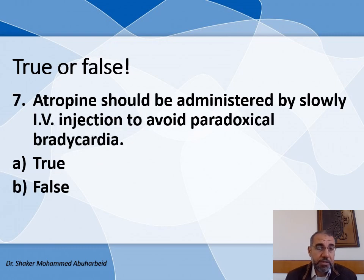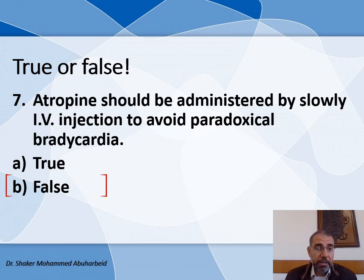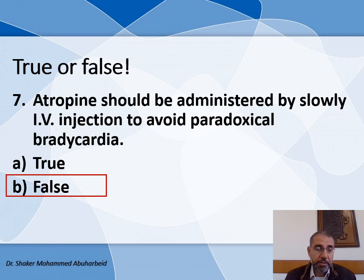Question number seven true/false: Atropine should be administered by slow IV injection to avoid paradoxical bradycardia — this is false. Atropine should be administered quickly, not slowly.